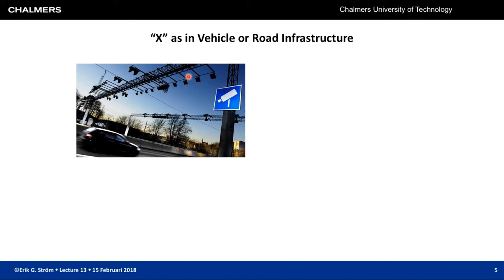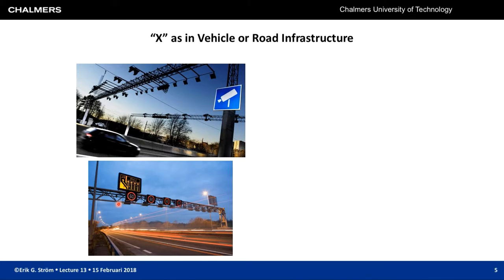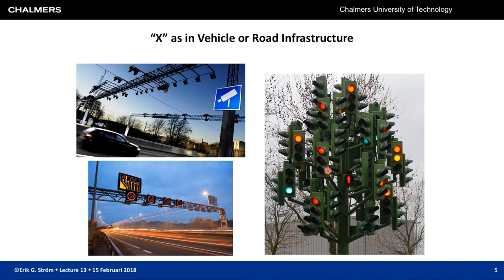Road infrastructure could be something like a toll station — smart infrastructure that can communicate with vehicles. It could also be adaptive speed signs that adjust the speed limit to maximize traffic flow. Or it could be regular infrastructure like a stop sign, which could benefit from communications to inform approaching vehicles about signal timing.